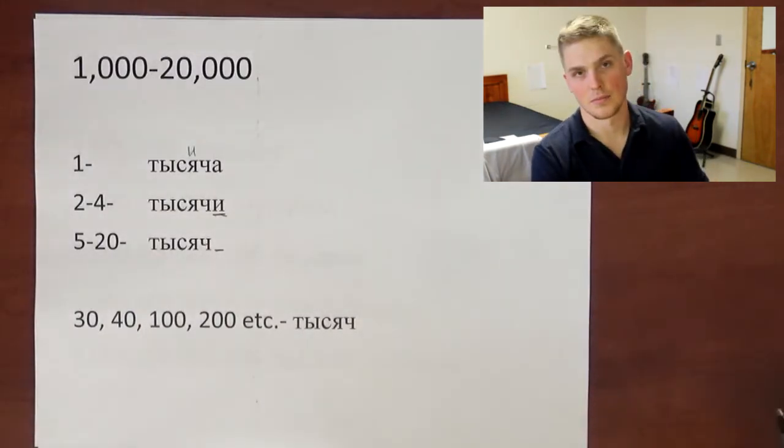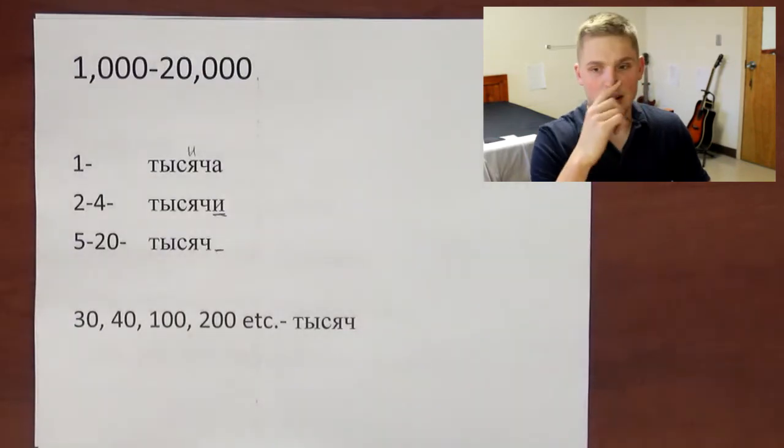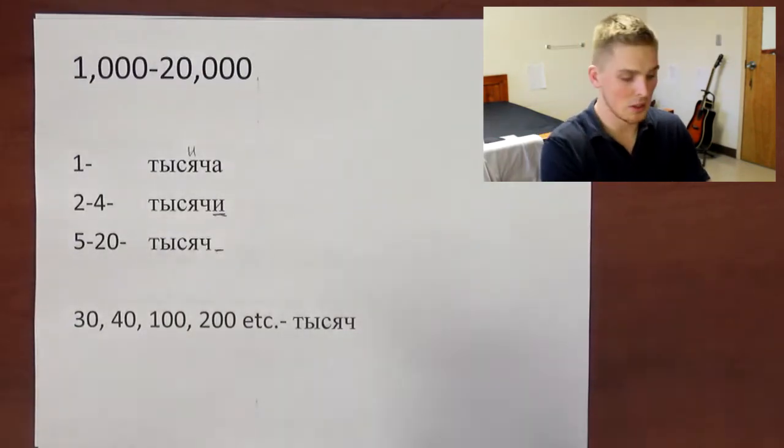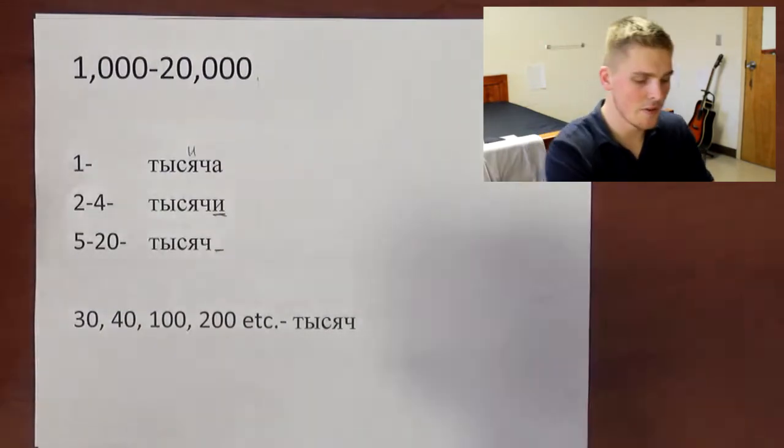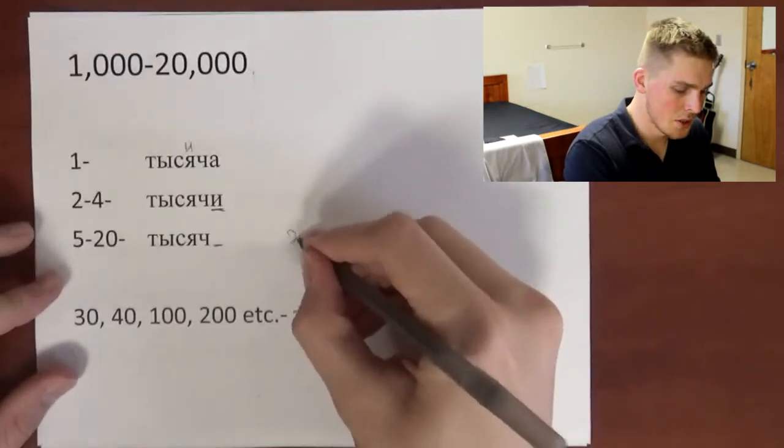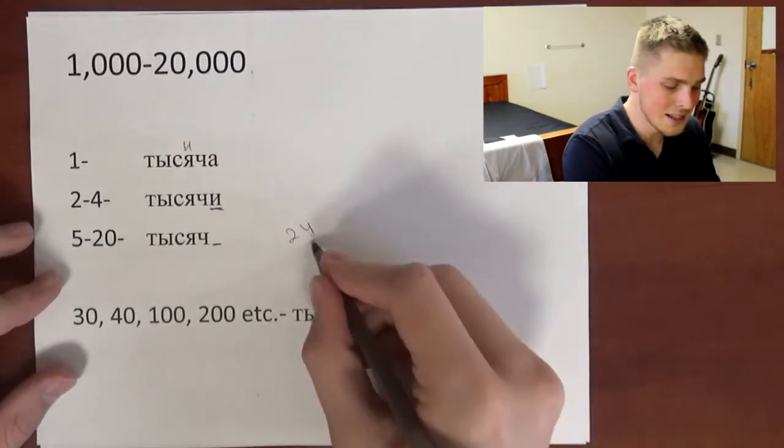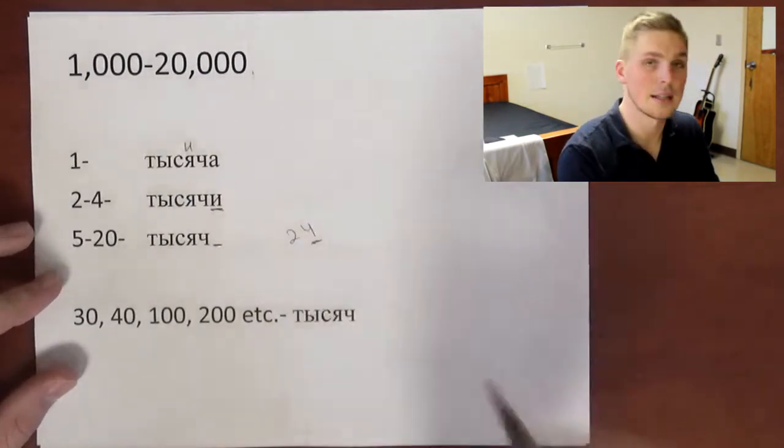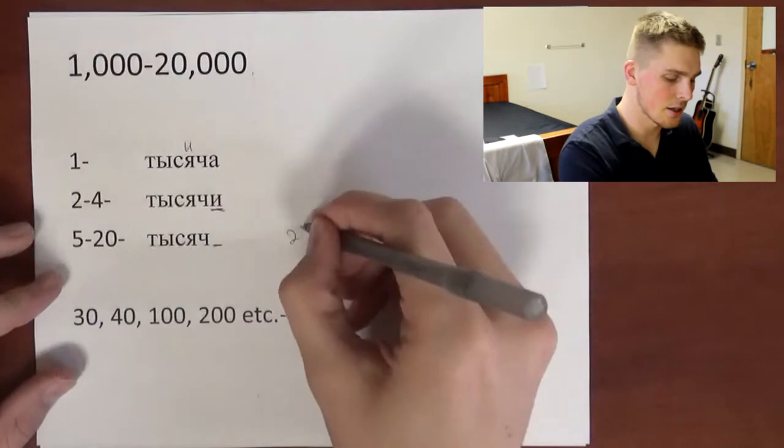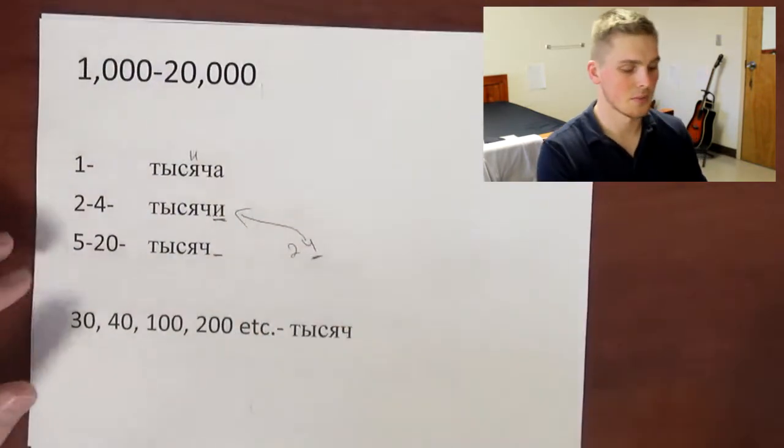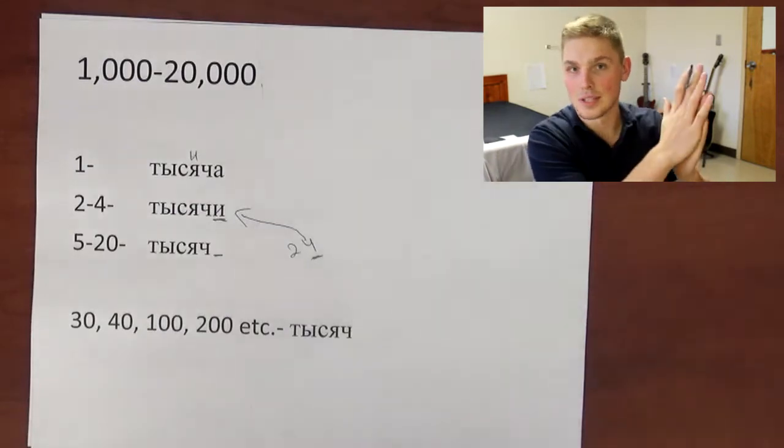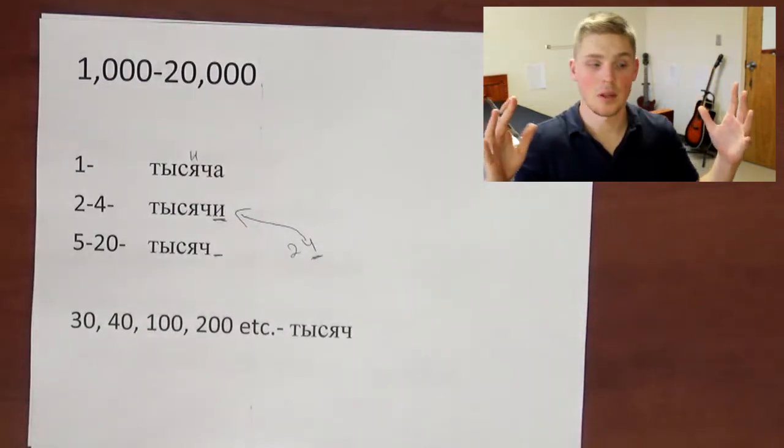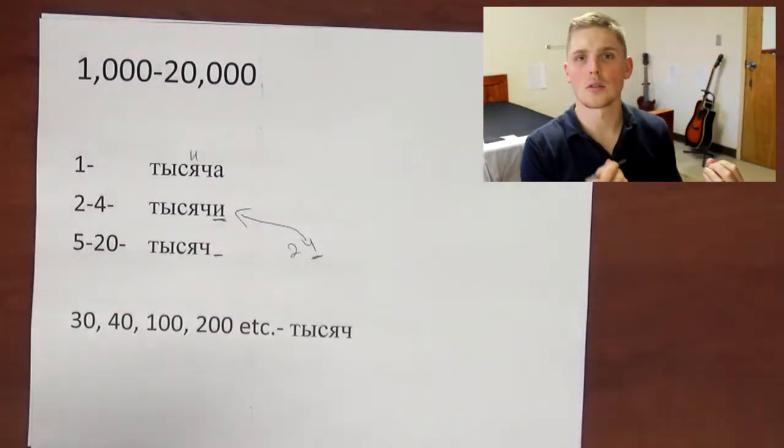For numbers like twenty-one, we're gonna base the word for thousand based on the last number. So if it's for example 24, then four is the last number and it falls under this category right here. So depending on the last number of the entire number, we're going to choose which ending we're going to be using.